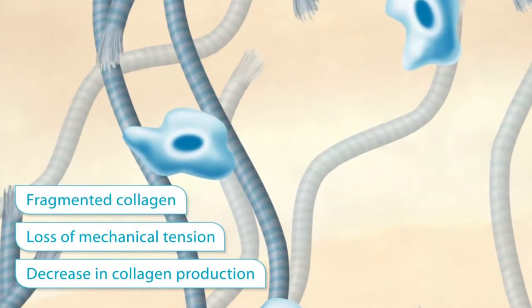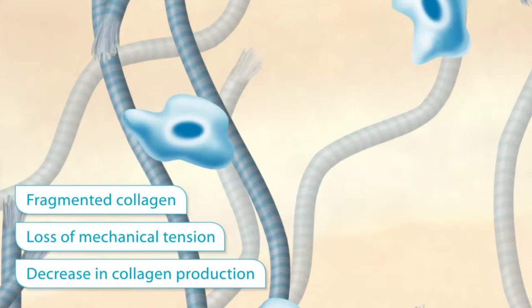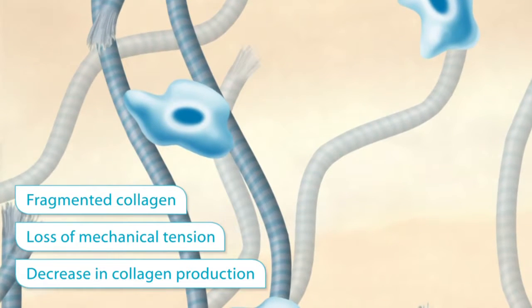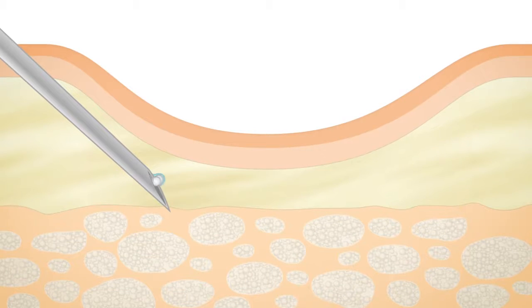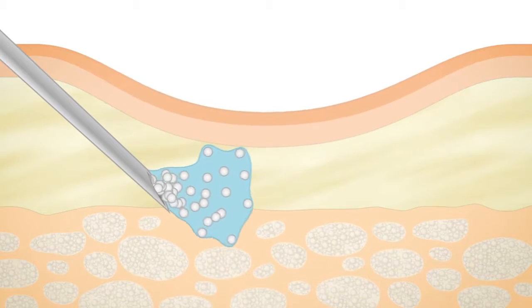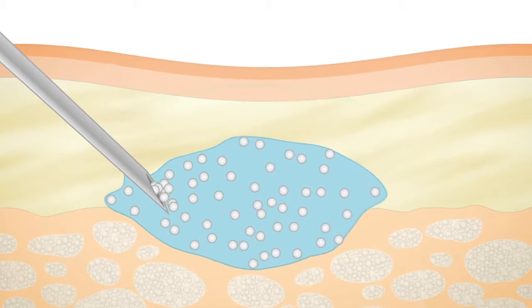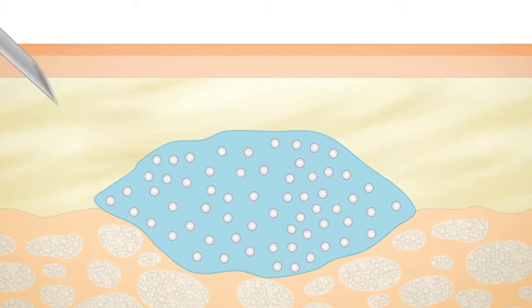The gel is injected directly into the deep dermis, where it shows an immediate filling effect and corrects the localized loss of volume.